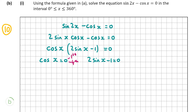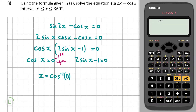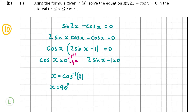The value for x must be in either the first or the fourth quadrant. x is equal to cos inverse of 0. Make sure your calculator is in degrees, then click shift and cos to get cos inverse, then 0, and we get 90. So x equals 90 in the first quadrant. To find x in the fourth quadrant, take 90 away from 360, giving 270 degrees. So x is equal to 90 degrees and 270 degrees.